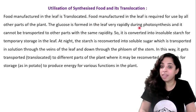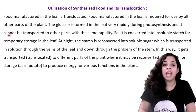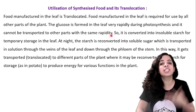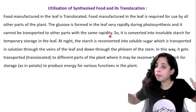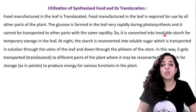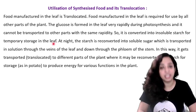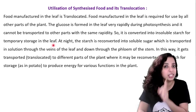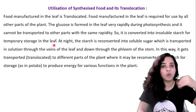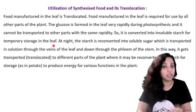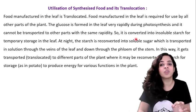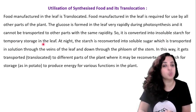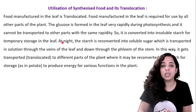Glucose is formed in the leaf very rapidly during photosynthesis, but it cannot be transported to other parts with the same rapidity. So it is first converted into insoluble starch for temporary storage in the leaf. It must be insoluble — if it were soluble, it would dissolve in water and be transported away rather than stored.